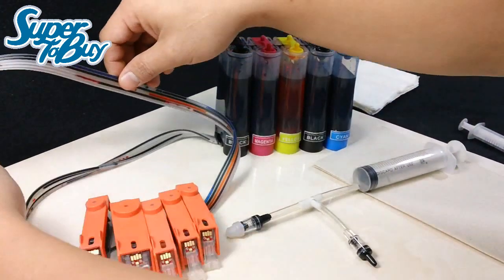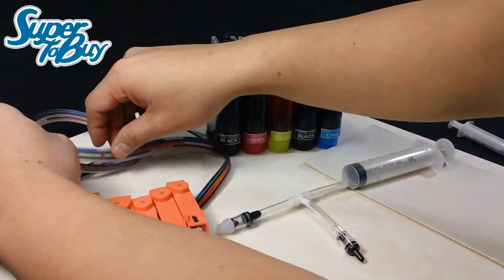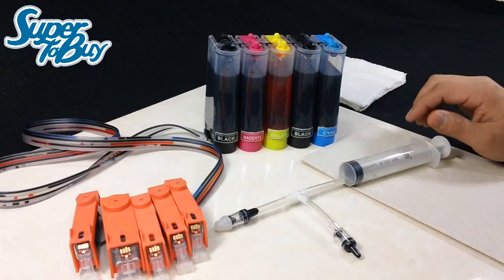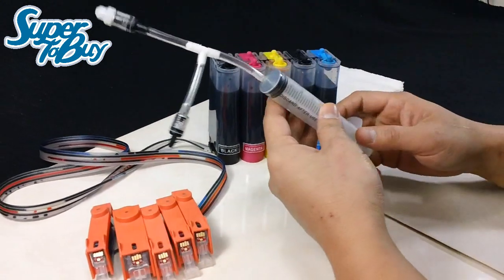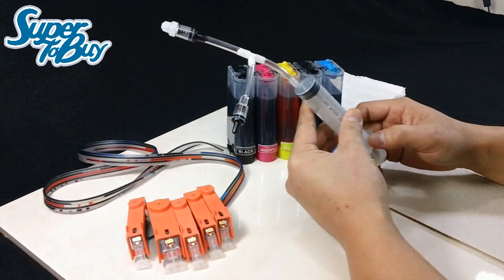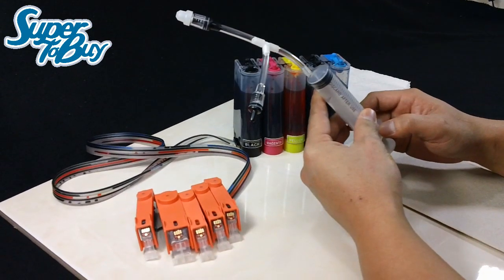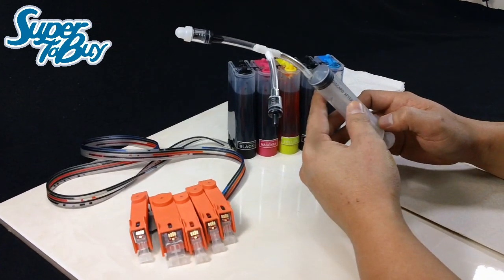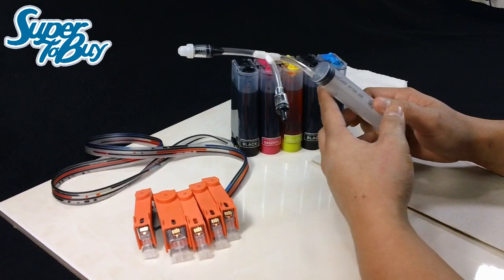In order to prime your system, if you happen to have a vacuum syringe such as this one, it will help you out tremendously when it comes down to priming a system.